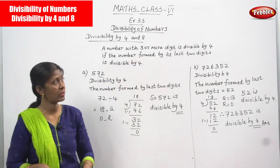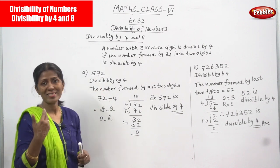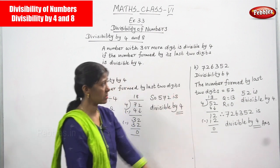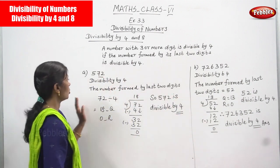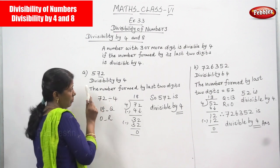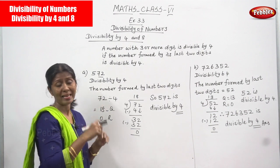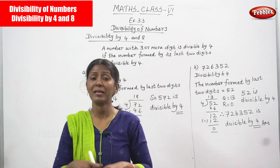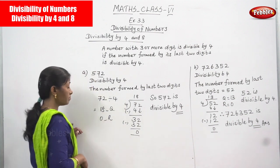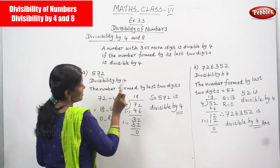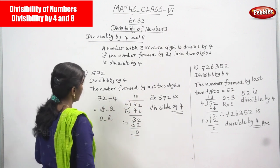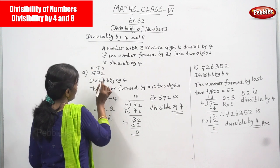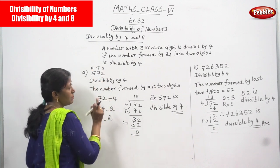So the first example is 572. As I told you, a number with three or more digits — this is a three-digit number. You can also take more than three-digit numbers, like a six-digit number. But you have to take the last two digits and check whether they are divisible by 4 or not. The number formed by the last two digits of 572 — the ones and tens — is 72.